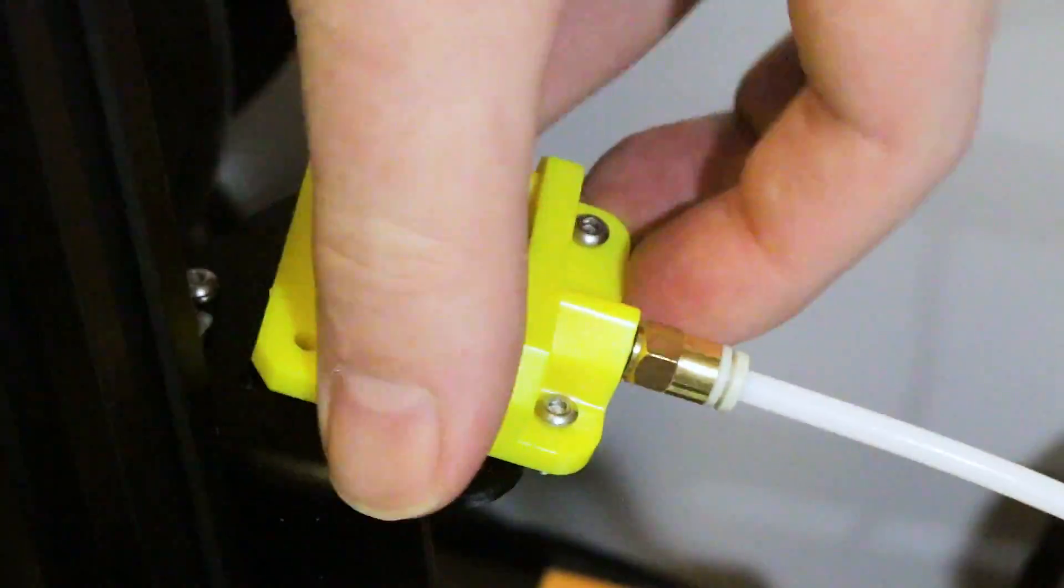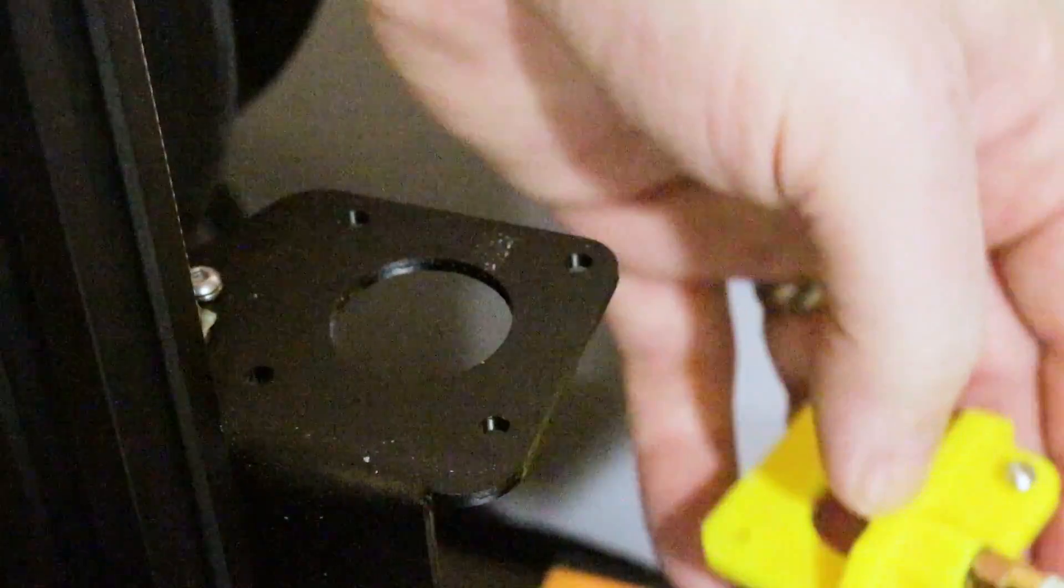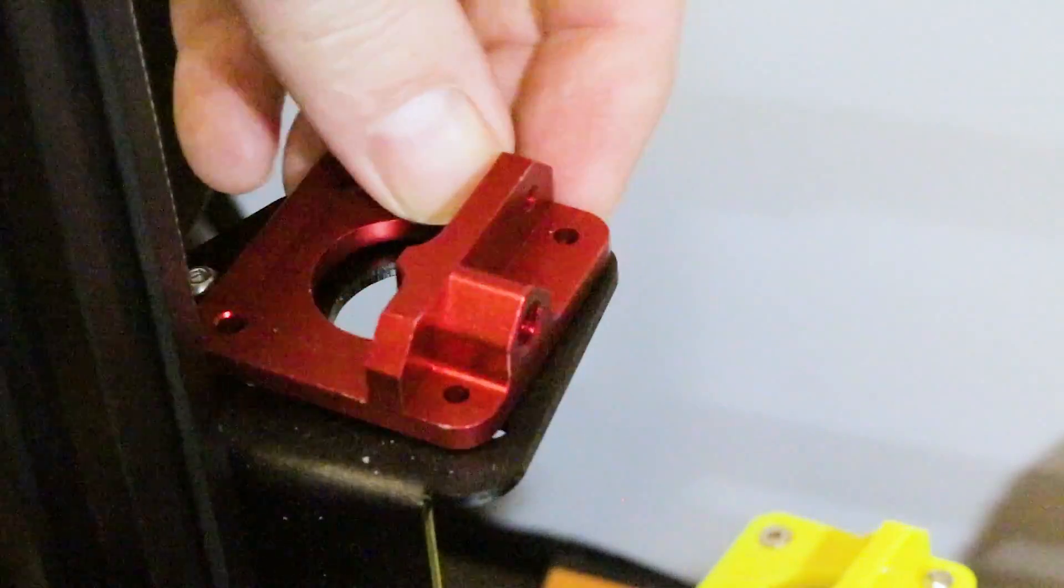Remove the old plastic plate and screws and set the new anodized aluminum one in place.